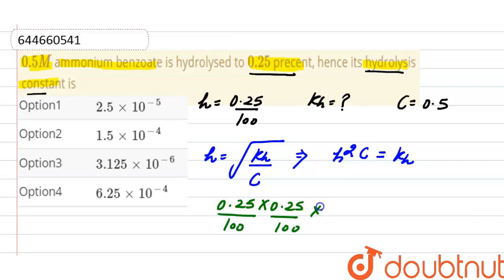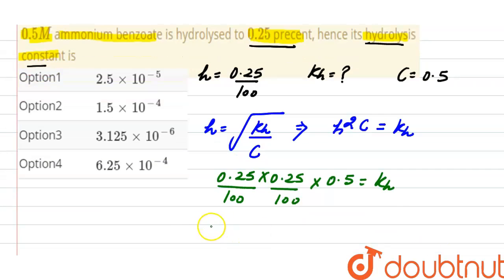From here, the value of hydrolysis constant equals 3.125 × 10^-6, and the correct option here will be option 3.